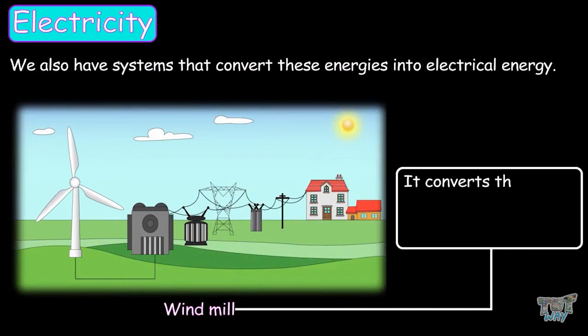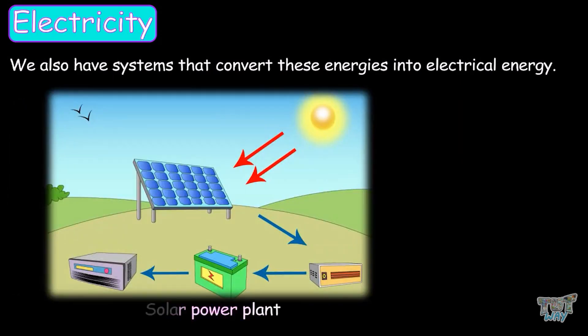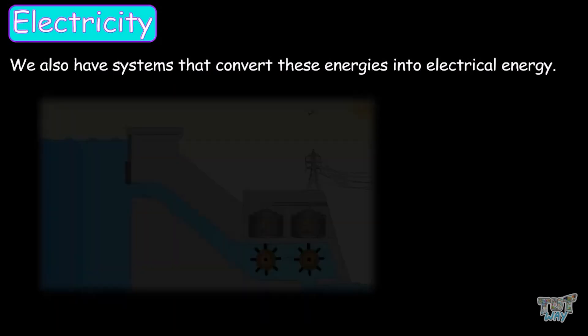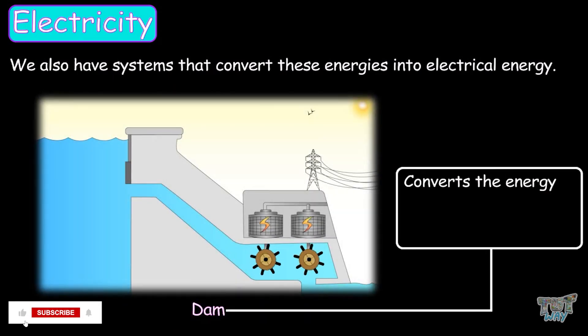Like a windmill, it converts the energy of moving air into electrical energy. Solar power plant converts the energy from the sun into electrical energy. A dam converts the energy of flowing water into electrical energy.